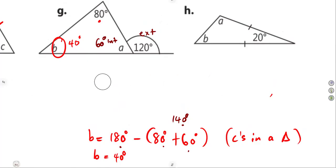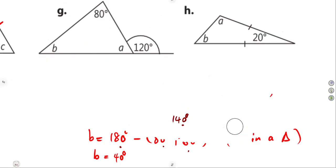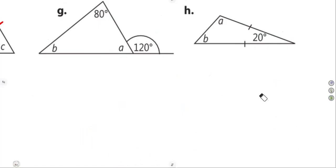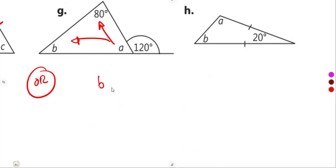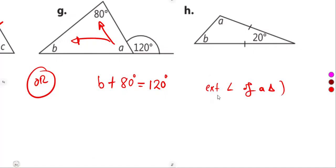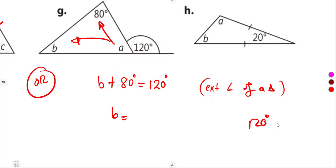There are many ways to answer this. Using the exterior angle property: B plus 80 degrees must equal the exterior angle of 120 degrees. So B equals 120 minus 80, which gives 40 degrees — the same answer.